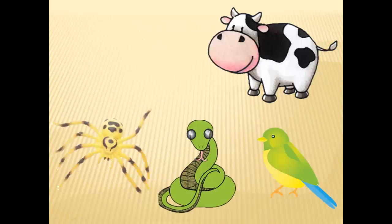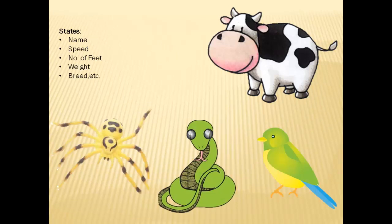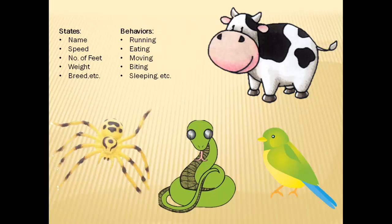Consider these animals as objects. Being objects, they have states like name, speed, number of feet, weight, and more. They also have behaviors like they run, they eat, they move, they bite, and more. A cow is an object, so does a bird, so do the snake and the spider. They are different objects, but they can be of the same kind. That kind is the class.